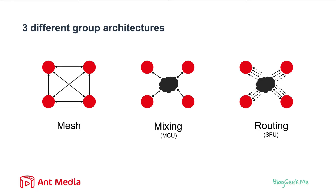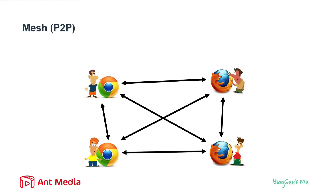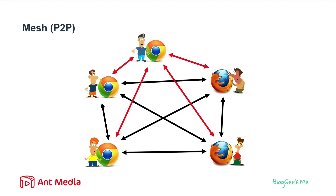Mesh is also known as peer-to-peer, which means two or more participants talking directly to each other. In this use case we've got four participants. If a fifth person wants to join, he will need to connect to all previous participants to receive and send media from them. This means that with five participants, each user will have four separate connections — one to each of the other users in the session.